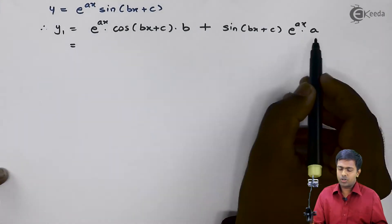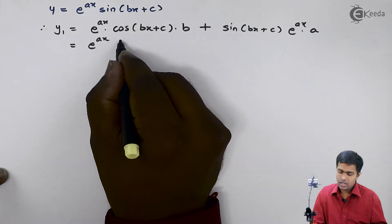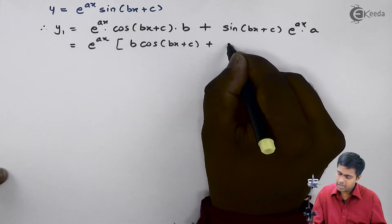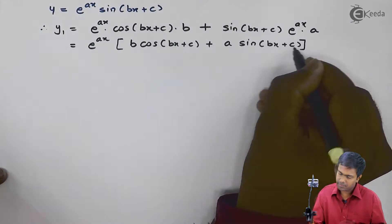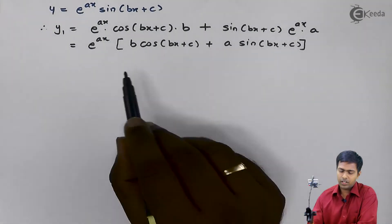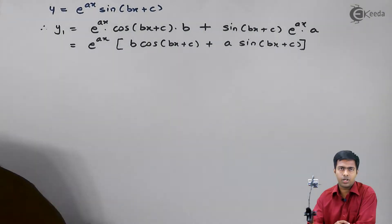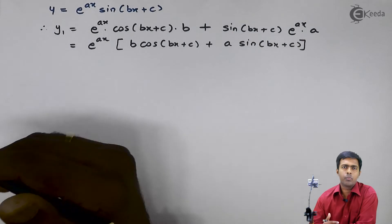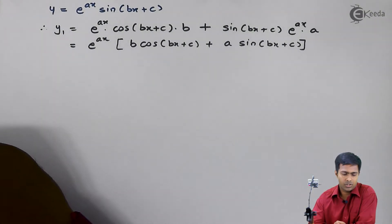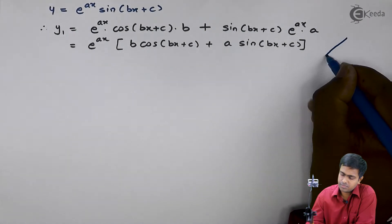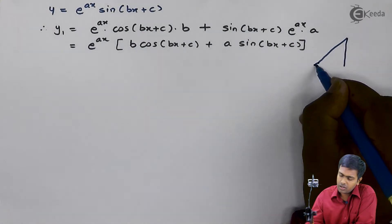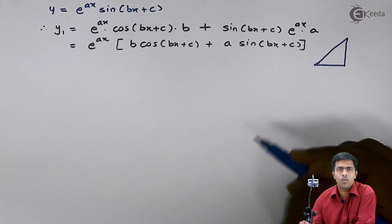From these two terms we get e raised to ax as a common factor, and inside the bracket we get b into cos(bx plus c) plus a into sin(bx plus c). Now if we try to find y2 from this value of y1, this function will expand and we will get more terms — and hence it will become very difficult to predict yn. To make it easier, we will use a different approach. Here I draw a triangle.